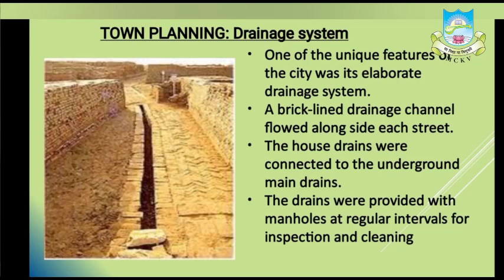The drainage system can be said to be the most impressive achievement of the Harappans. Every street had its own brick-lined drainage channel, and each house had a drain connected to the street drains. All these drains were properly covered and had manholes at regular intervals for inspection and cleaning. It is very clear that the people of the Harappan civilization were highly conscious about their sanitation and cleanliness. This type of drainage system was not found in the Mesopotamian or Egyptian civilizations, which were also highly developed, making it a very unique feature of Harappan civilization.